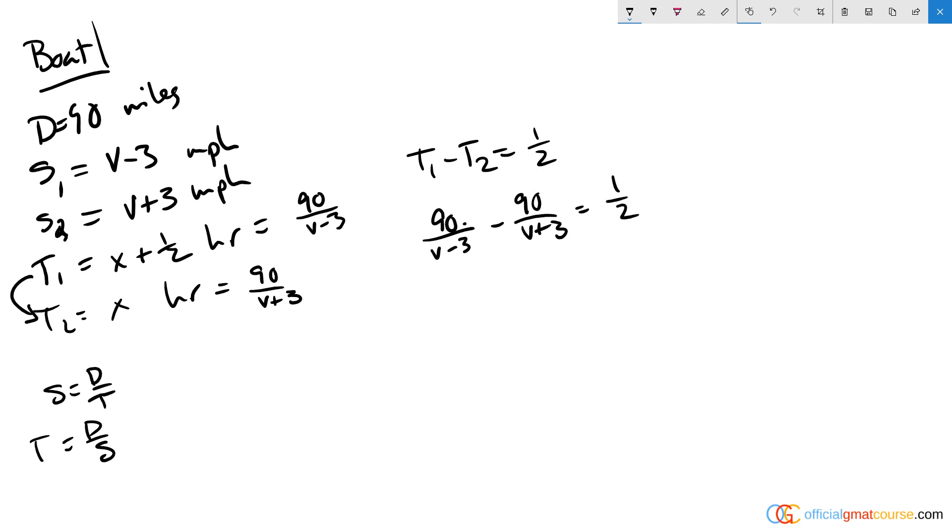If I get a common base by multiplying top and bottom by v plus 3 here and v minus 3 here to get a common basis of v plus 3 times v minus 3, I'll end up with v plus 3 times 90 minus v minus 3 times 90, all over v squared minus 9, because this is the difference of squares formula.